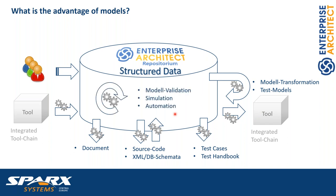Within Enterprise Architect, we can use other automations to automatically process data. For instance, we can validate the data when we automatically import it or manually create models — checking them against specific rules and guidelines at the structure level. We can use simulations for behavior models to check the semantics of our models — for example, start with a set of pre-configured inputs, run the simulation, and prove if the model provides the result we expect. We can also use the EA API internally to add any kind of automation you like.